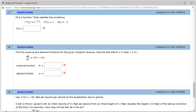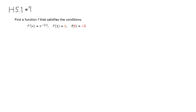Let's look at Hallmark 5.1, problem number 7. We're going to find f of x from f double prime of x. The first thing we need to do is find f prime. So f prime of x is going to be the antiderivative of f double prime, which is x to the negative 3 over 2, with respect to x.